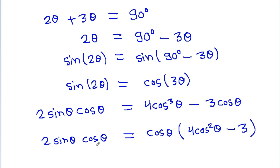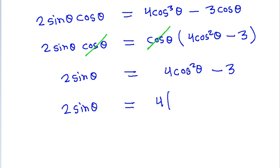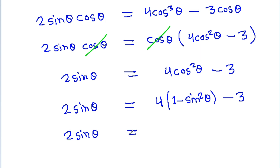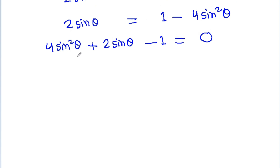Since theta equals 18 degrees, cos theta will not be equal to zero. So we can cancel cos theta from both sides, giving 2 sin theta equals 4 cos² theta minus 3. Substituting cos² theta as 1 minus sin² theta, we get 2 sin theta equals 4(1 minus sin² theta) minus 3, which simplifies to 4 sin² theta plus 2 sin theta minus 1 equals 0. This is a quadratic equation in sin theta.